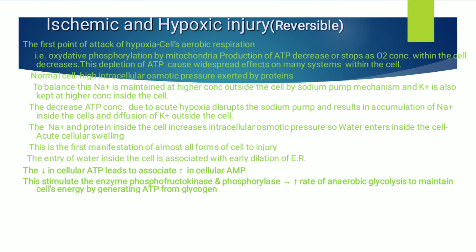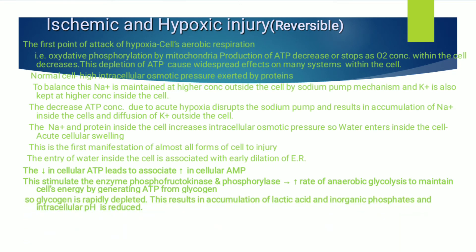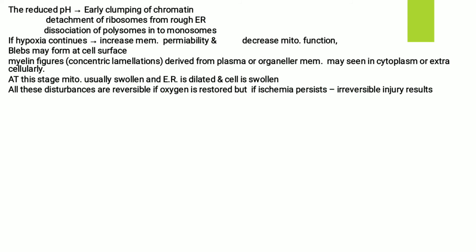Aerobic glycolysis is not occurring because oxygen is decreased, so anaerobic glycolysis takes place to maintain cell energy, using glycogen. Glycogen is rapidly depleted, resulting in accumulation of lactic acid — as you may know from anaerobic glycolysis in class 12, lactic acid is the end product. Accumulation of lactic acid and inorganic phosphate reduces intracellular pH. Due to reduced pH, three things are seen: clumping of chromatin, detachment of ribosomes from rough endoplasmic reticulum, and dissociation of polysomes into monosomes.